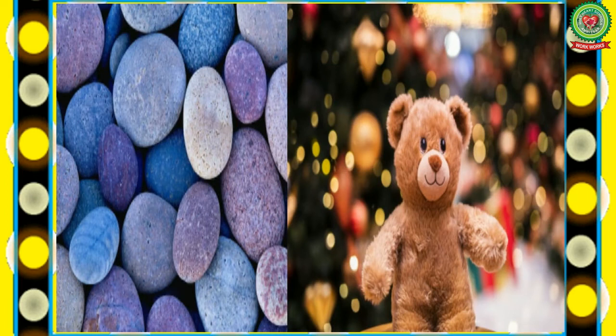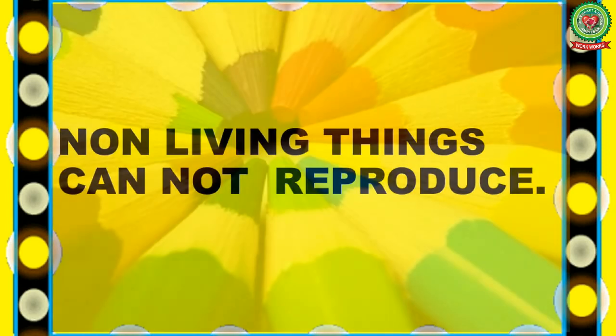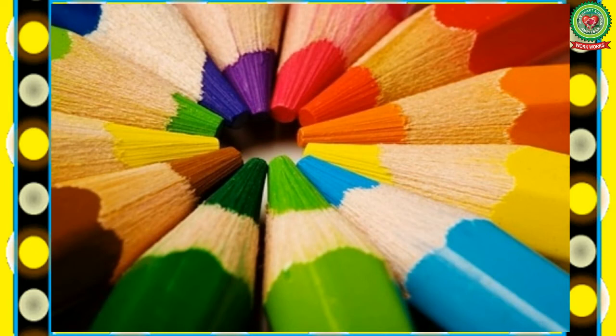Another feature of non-living things is they cannot reproduce — they cannot give birth to their young ones. Here you can see some colorful pencils. Can they reproduce or make their own kind? No, they cannot. That's why you always have to purchase a new pencil when your last one is used up. Non-living things cannot reproduce.